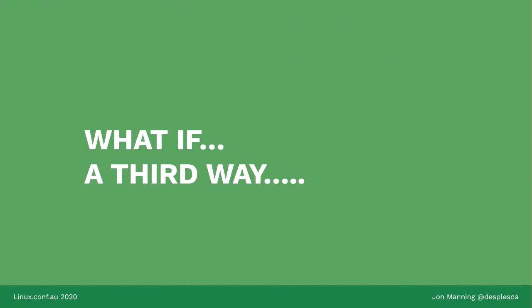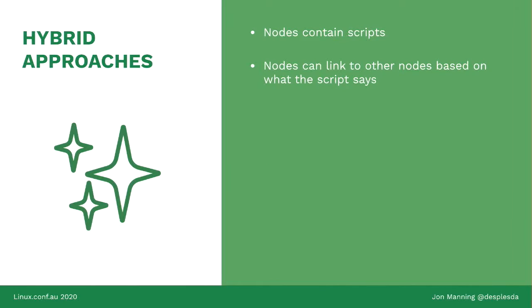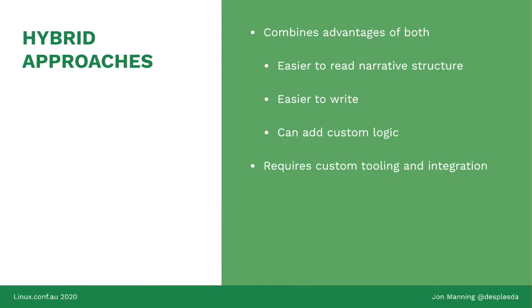But what if there was a third way? The third way would be to combine the two: you create a node-based approach but each node contains a full script. This allows you to combine the advantages of both systems — you can view the narrative structure in the visual form of the node-based approach, but also write lines of text much more quickly than you could create new nodes.